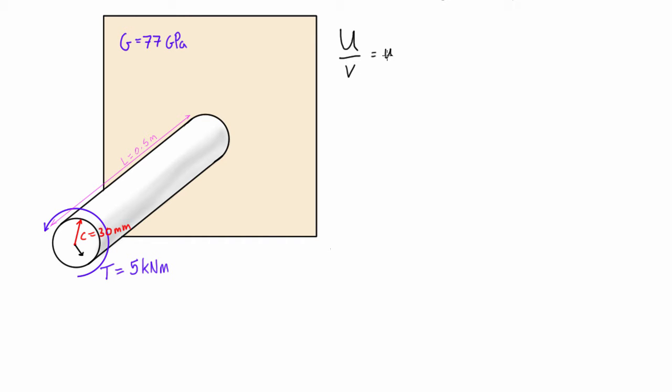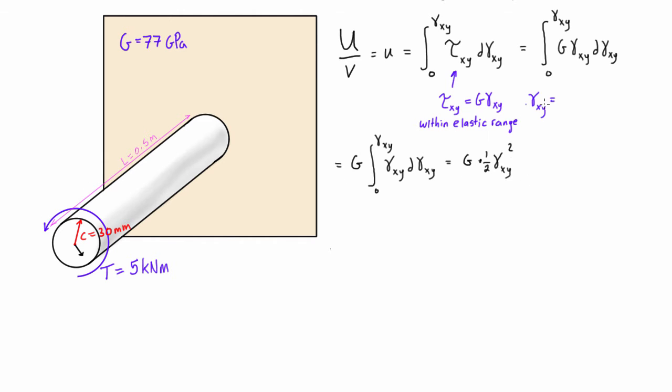And as long as we're working in the elastic range then the strain energy density for a member in torsion is just the shearing stress squared over two times the modulus of rigidity. And then all we have to do is just integrate that over volume to get the total strain energy. So it would just be like this with tau xy squared over 2g dv. So this is just the general expression for strain energy.